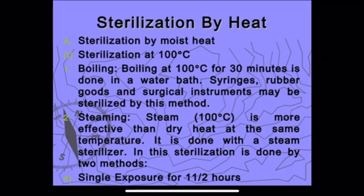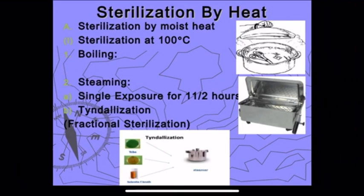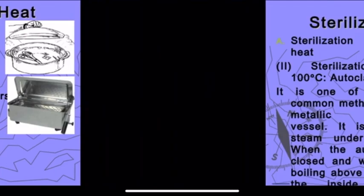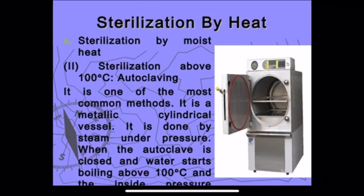Sterilization at 100 degrees Celsius means boiling — syringes, rubber goods, and surgical instruments may be sterilized by boiling in water for 30 minutes using moist heat. Sterilization above 100 degrees Celsius refers to autoclaving, which maintains a temperature of 121 degrees Celsius.